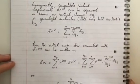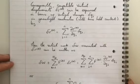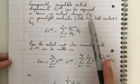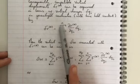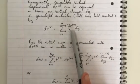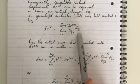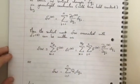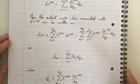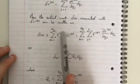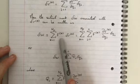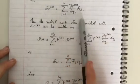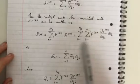Consequently, compatible virtual displacements delta Rk can be expressed in terms of virtual changes delta Qj in generalized coordinates with time held constant by delta Rk equals the sum as j equals 1 to n of the partial derivative of Rk with respect to Qj times delta Qj. Then the virtual work delta W associated with delta Rk can be written as delta W equals the sum as k equals 1 to np of Fk dotted with delta Rk, and this is simply equal to, well, you just substitute delta Rk for our equation here, and we get our double sum.